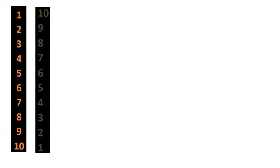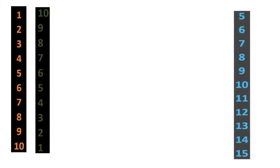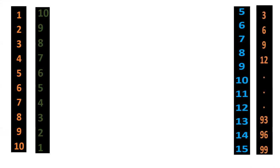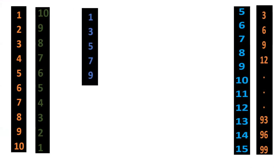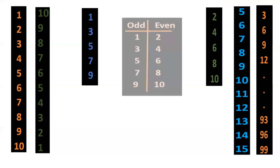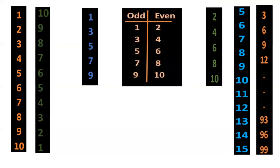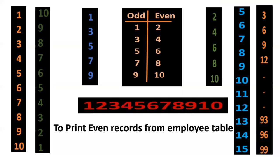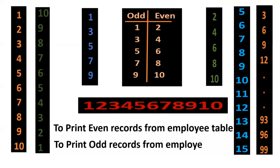Today we will see different number patterns in SQL interview questions. First one is to print 1 to 10 numbers. Next, 1 to 10 numbers in reverse manner. Next is to print a certain range like 5 to 15. Then multiples of 3 from 1 to 100 numbers. Print odd numbers, even numbers, and print odd and even numbers in a single query. Print 1 to 10 numbers in horizontal manner. From the employee table, we need to print even records and odd records.